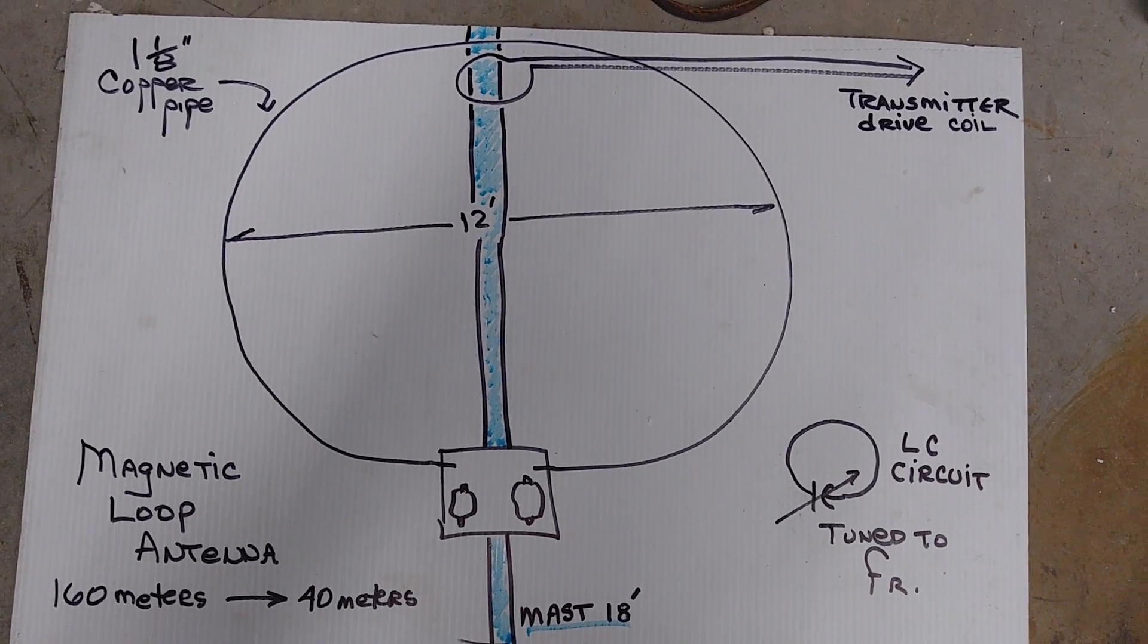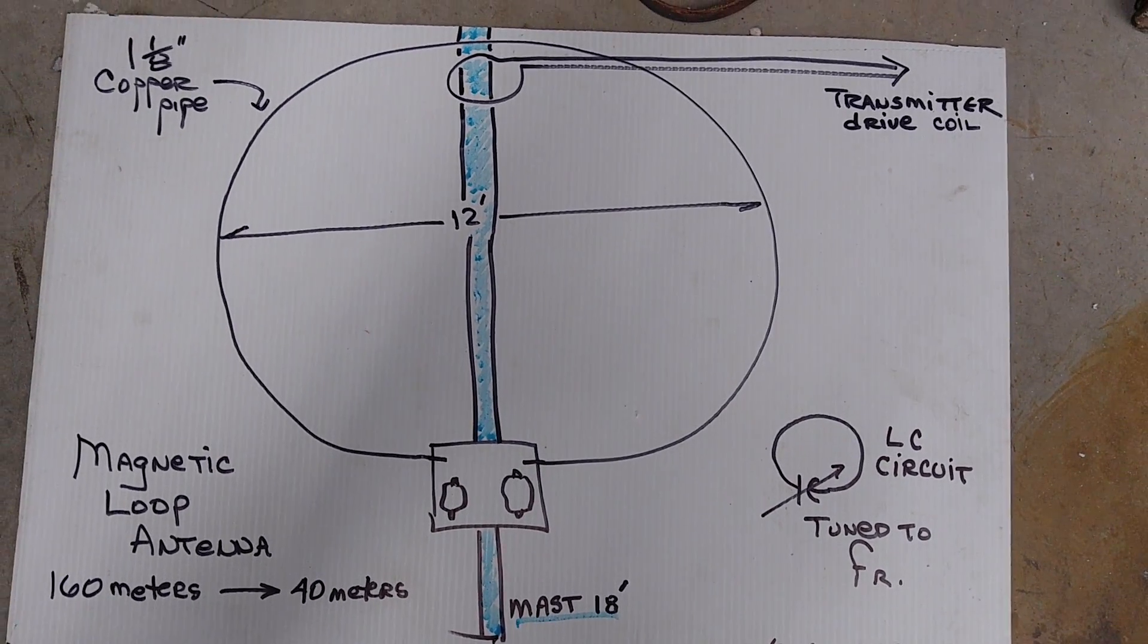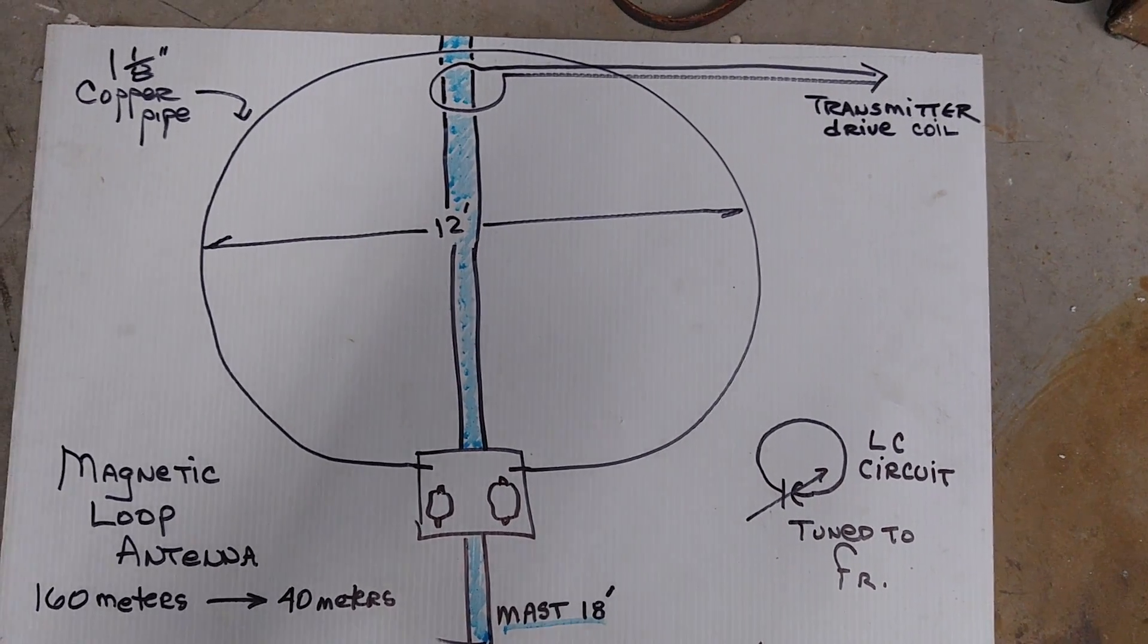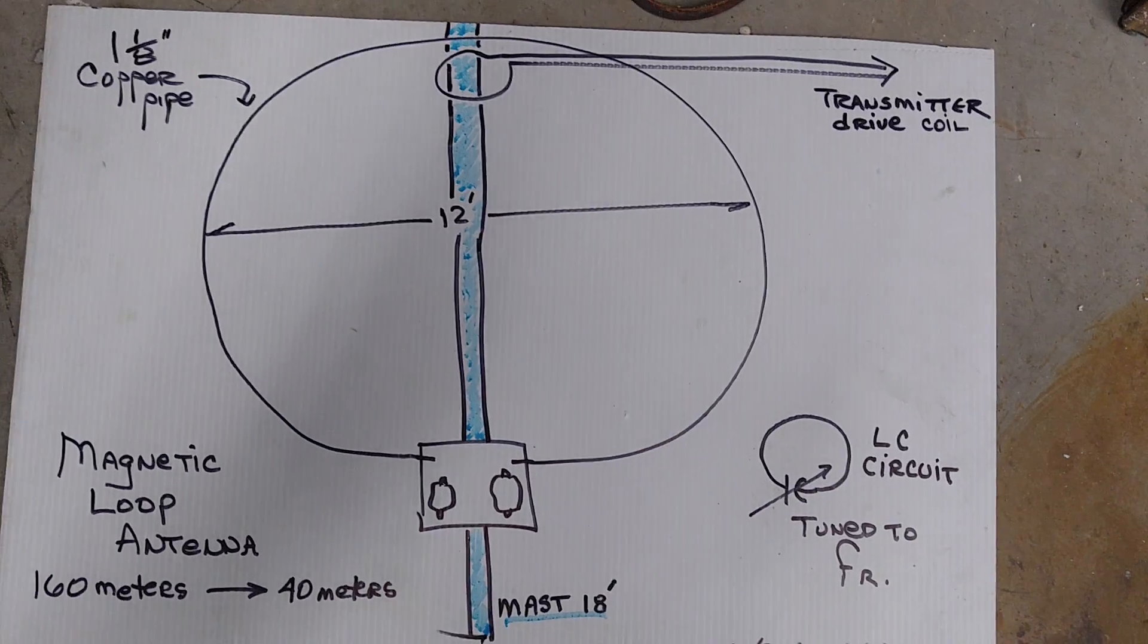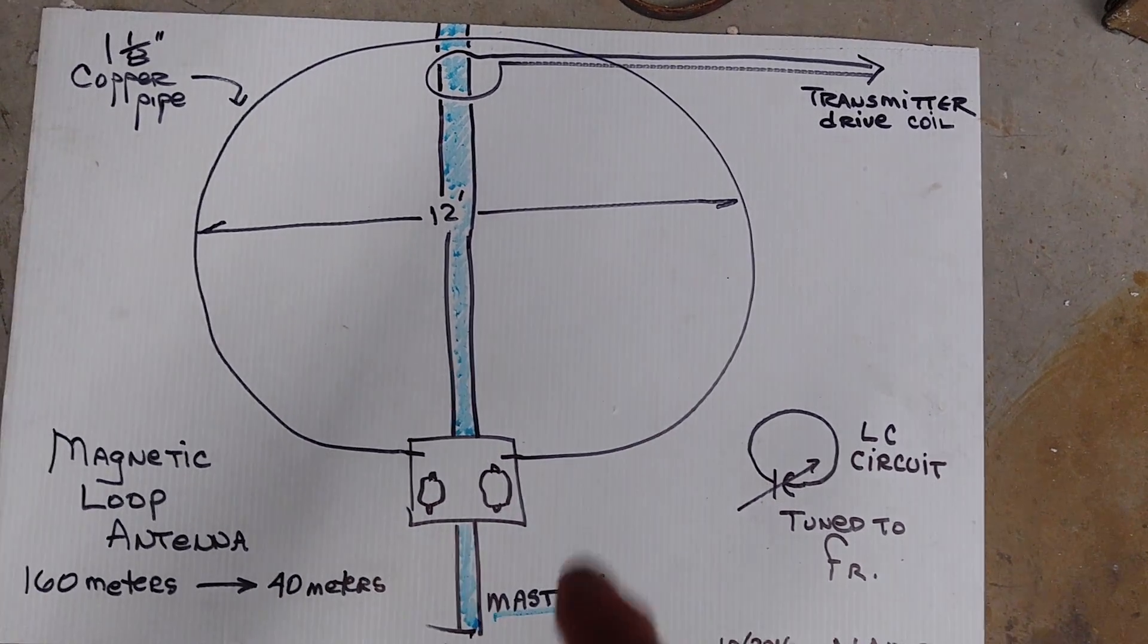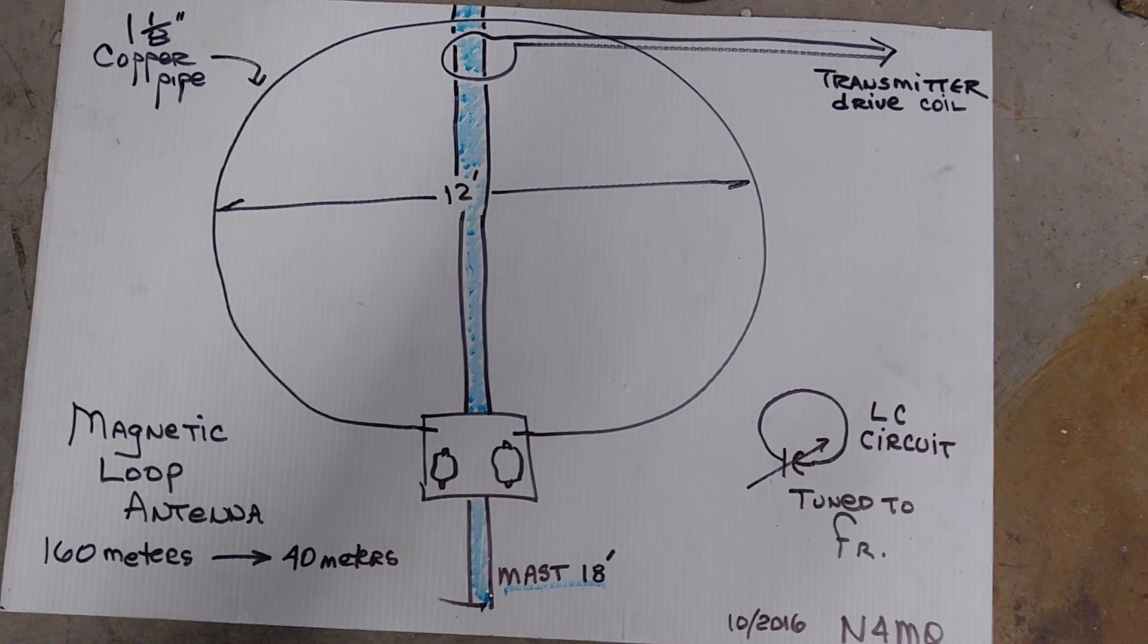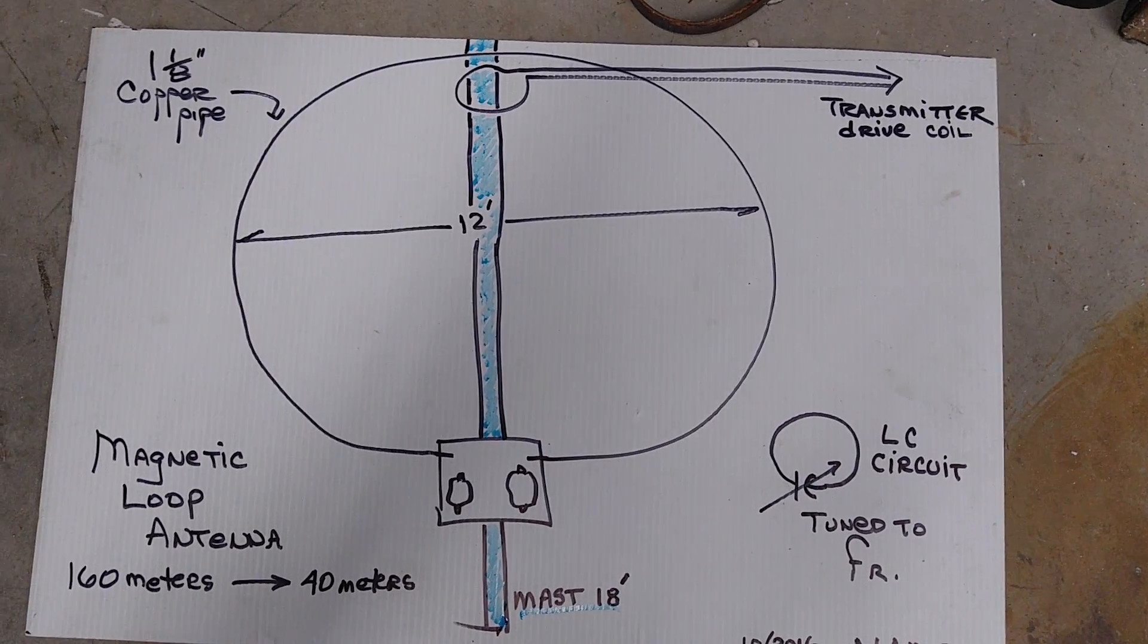The bandwidth on this thing is in the order of kilocycles, a few kilocycles, very small. It's a very high Q antenna. And the circulating current in this antenna is as much as 100 amperes. And the voltage across this capacitor is up in the order of like 15 to 20 kilovolts, depending on the frequency and the drive power.